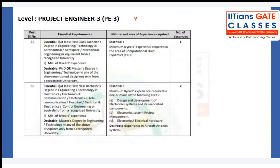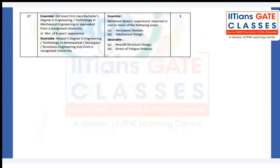For Project Engineer 3, eight years of experience is required. If someone has done a PhD plus four years of experience, or an M.Tech with six years of experience beyond the degree, they can opt for Project Engineer 3 positions.